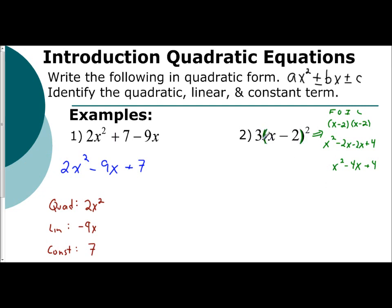We still are going to have to distribute that 3. And so I have 3 times the quantity x² - 4x + 4. Distribute, you get 3x² - 12x + 12. It is in standard form, quadratic form, my quadratic term, my linear term, and then my constant.